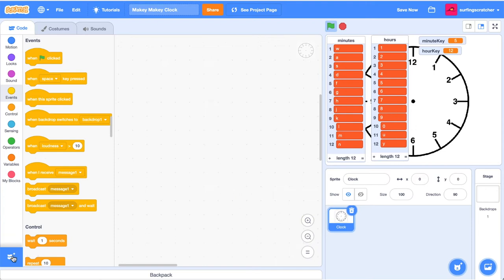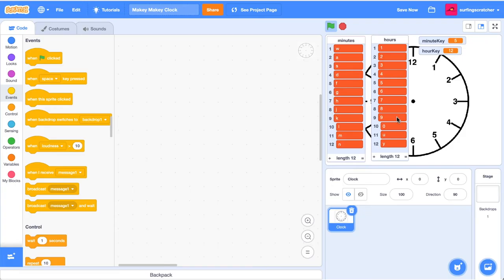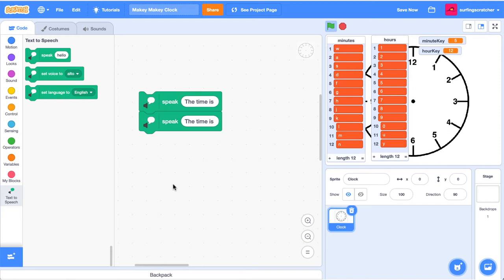Now that we have our keys working, we want to say the time. So we're going to use the text to speech extension. Click down the extensions in the bottom left hand corner and find the one that says text to speech. And we get a few blocks here. The first one we're going to drag out is a speak block. Now if we click this now, hello, it says hello. We're going to change this to the time is because remember our clock wants to tell us what the time. We duplicate this. The time is, the time is. Cool.